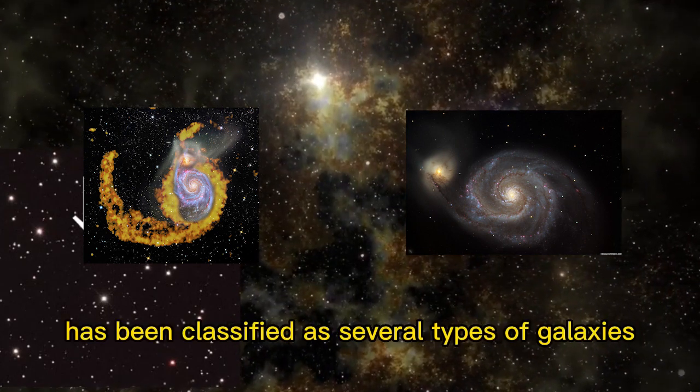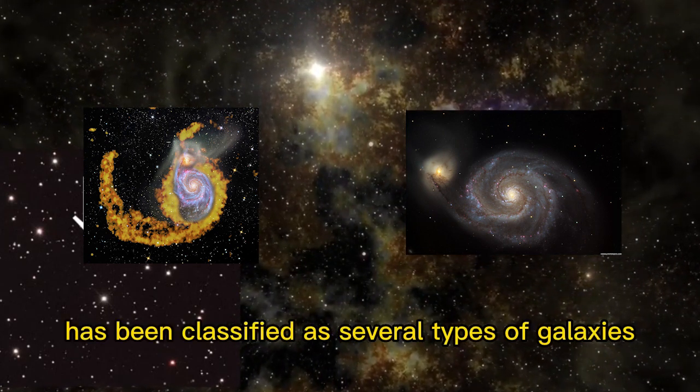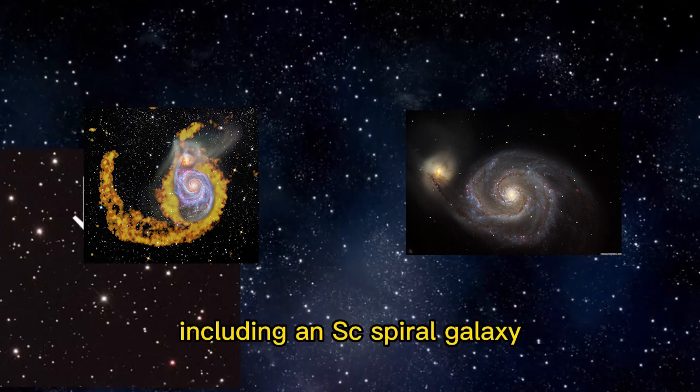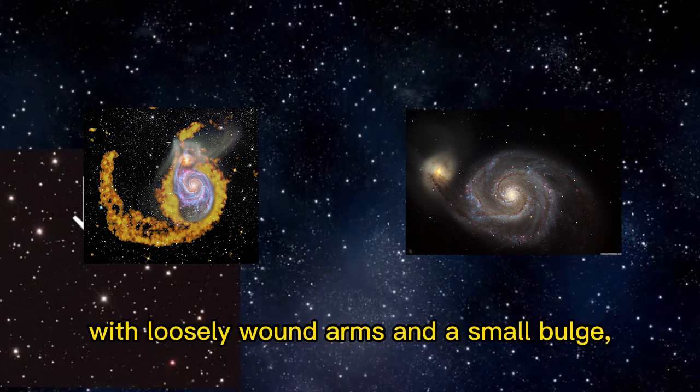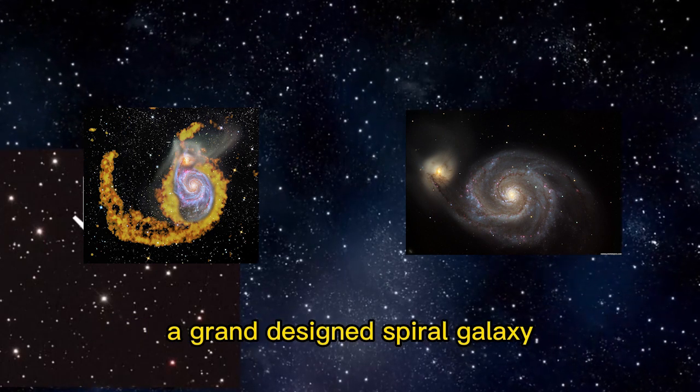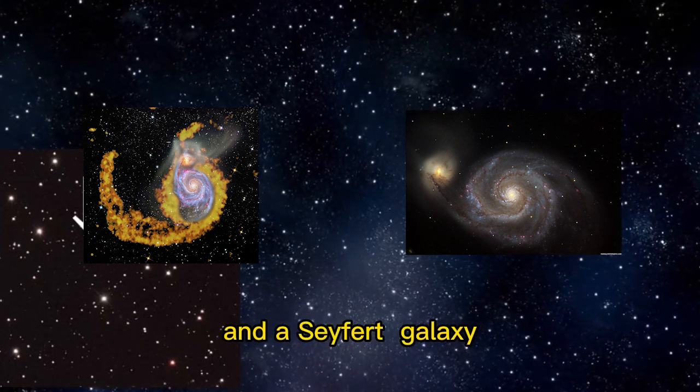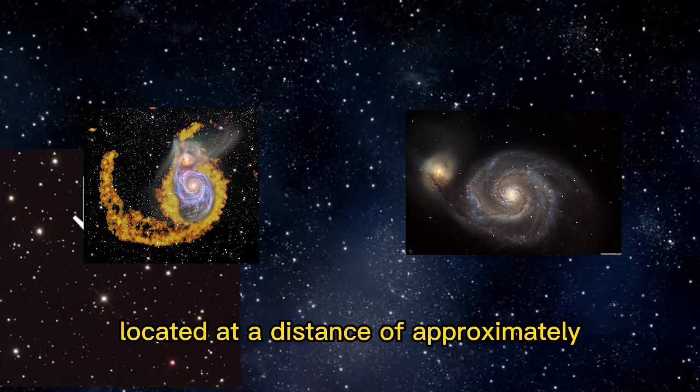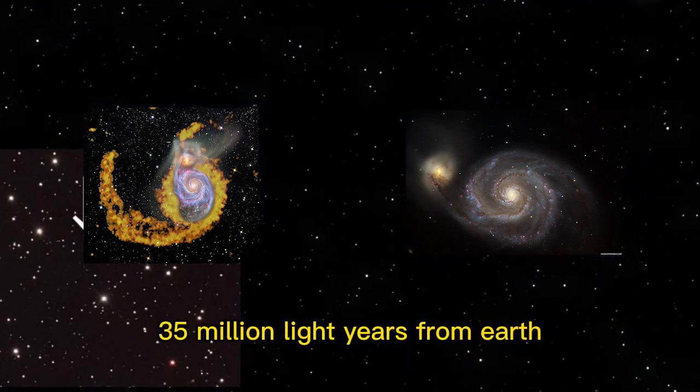The Whirlpool Galaxy has been classified as several types of galaxies, including an SC spiral galaxy with loosely wound arms and a small bulge, a Grand Design spiral galaxy, and a Seyfert galaxy. Located at a distance of approximately 35 million light years from Earth,